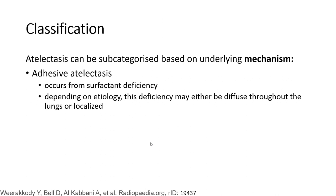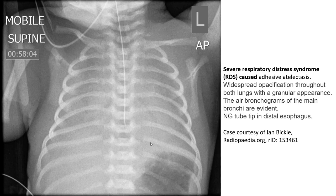Adhesive atelectasis occurs from surfactant deficiency. Depending on etiology, this deficiency may either be diffuse throughout the lung or localized. This is the case of severe respiratory distress syndrome in premature babies, which is caused by adhesive atelectasis due to surfactant deficiency.